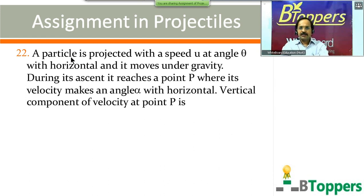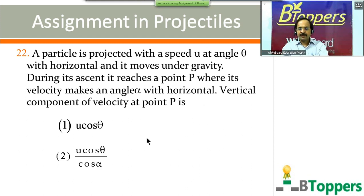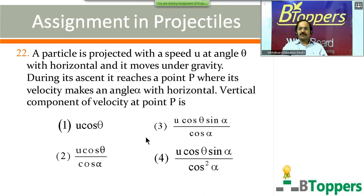Question number 22: a particle is projected with speed u at angle theta with the horizontal and moves under gravity. During its ascent it reaches a point P where its velocity makes an angle alpha with the horizontal. The vertical component of velocity at point P is — four options are shown on screen. Come on, try the question — you should not require much time for this one.